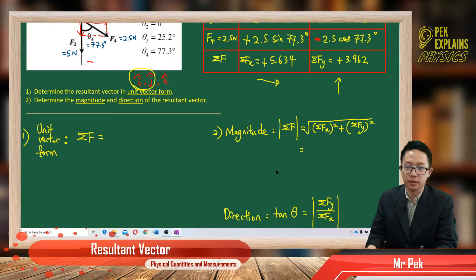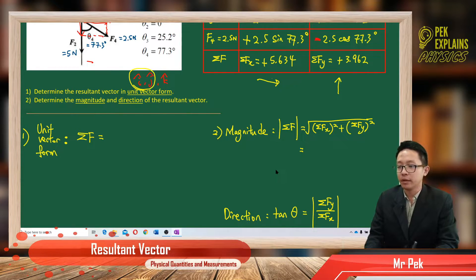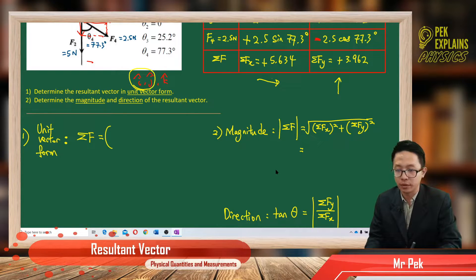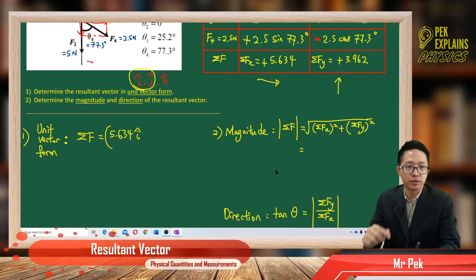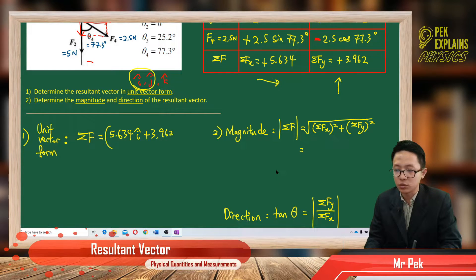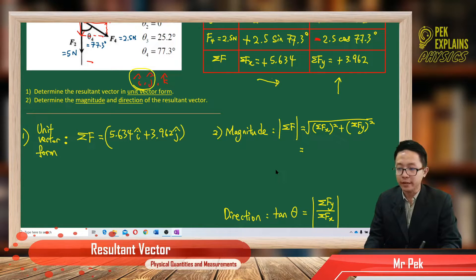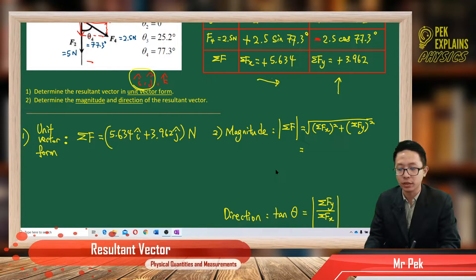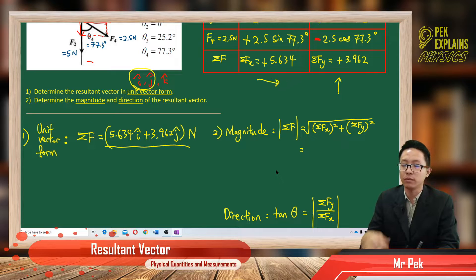Writing it down in unit vector form: the total X is positive 5.634, so it becomes 5.634i in the X component. The total Y is positive 3.962, going up, so it becomes 3.962j. Put it in brackets and don't forget the unit. This is what we call unit vector form — unit vector form must have I and J.